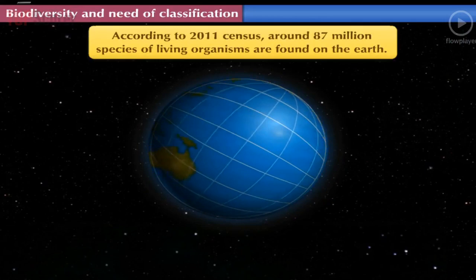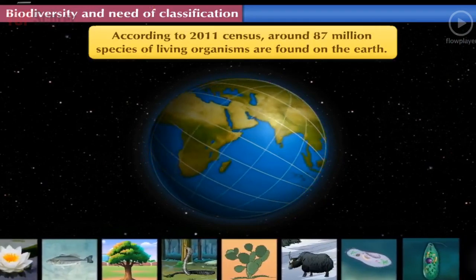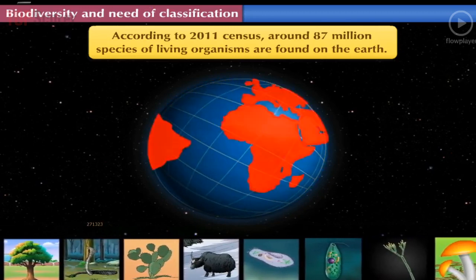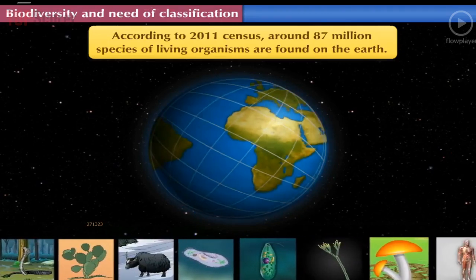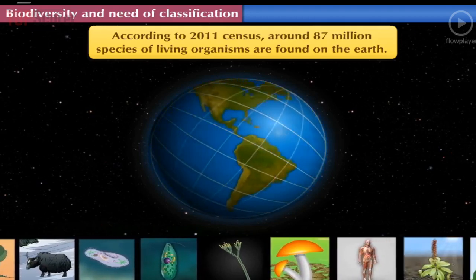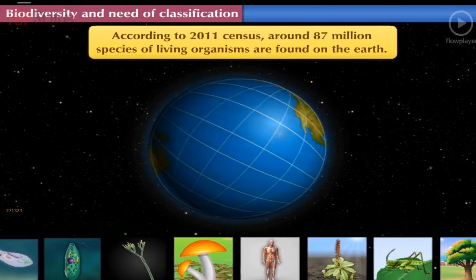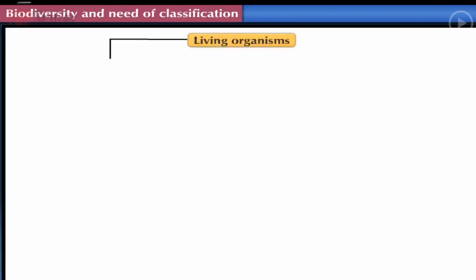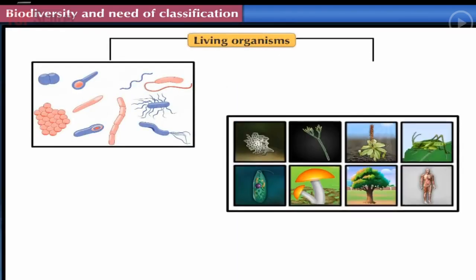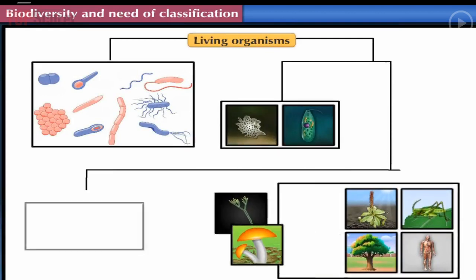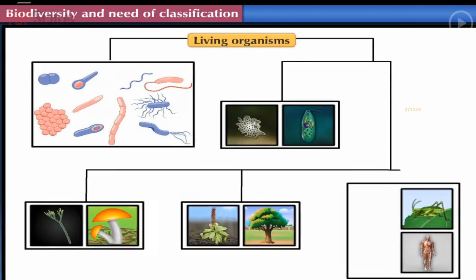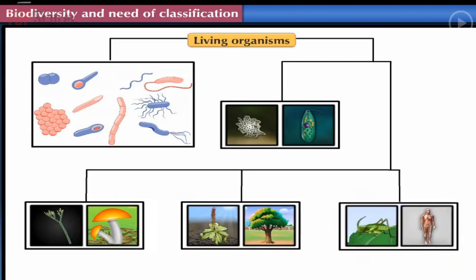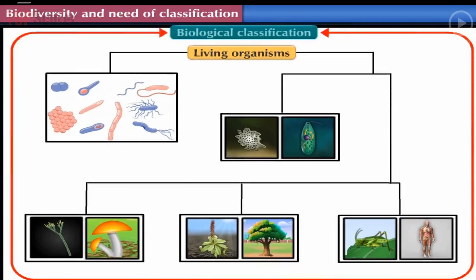According to the 2011 census, around 87 million species of living organisms are found on Earth, including land and sea. To study such a vast number, it was essential to divide them into groups. Therefore, groups and subgroups of living organisms were created considering the similarities and differences among them. This process of dividing living organisms into groups and subgroups is called biological classification.